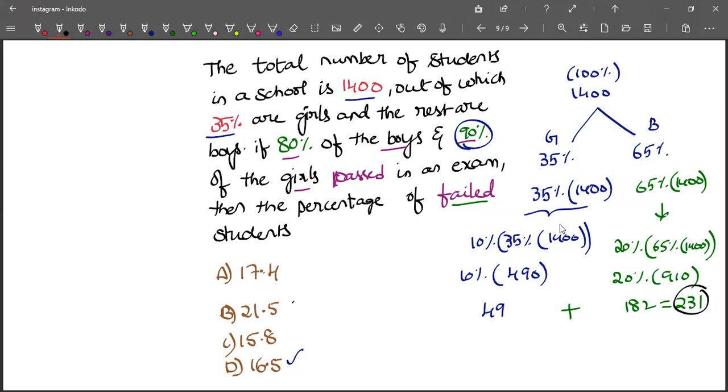But they are not asking us how many students failed in the exam. They are asking us the percentage of students who failed in the exam. How do you find the percentage?